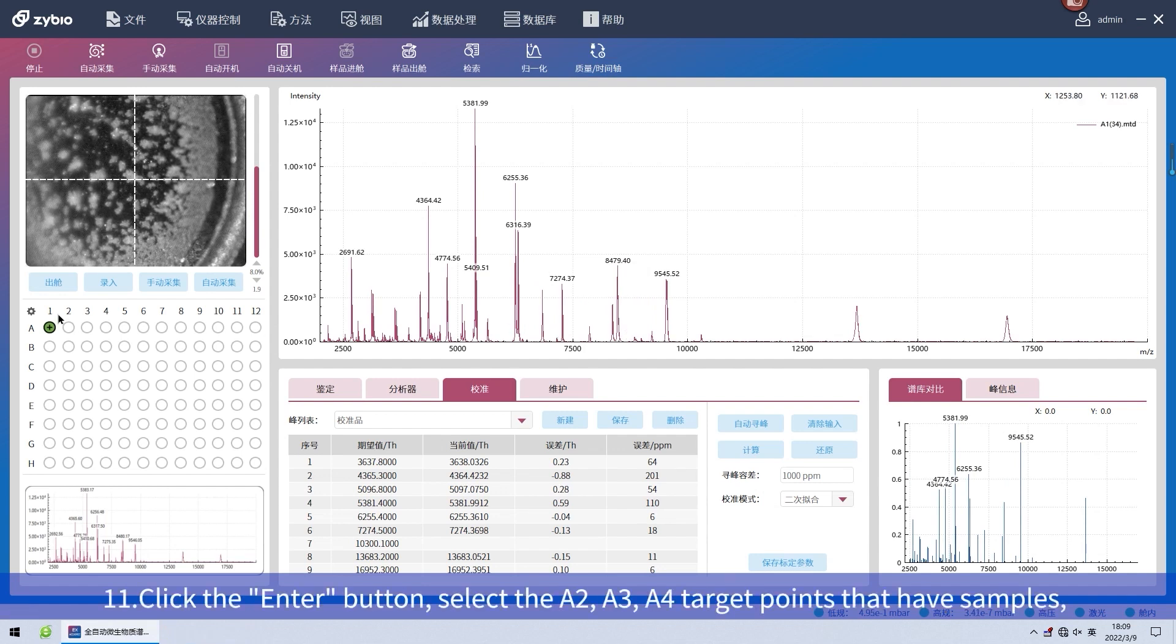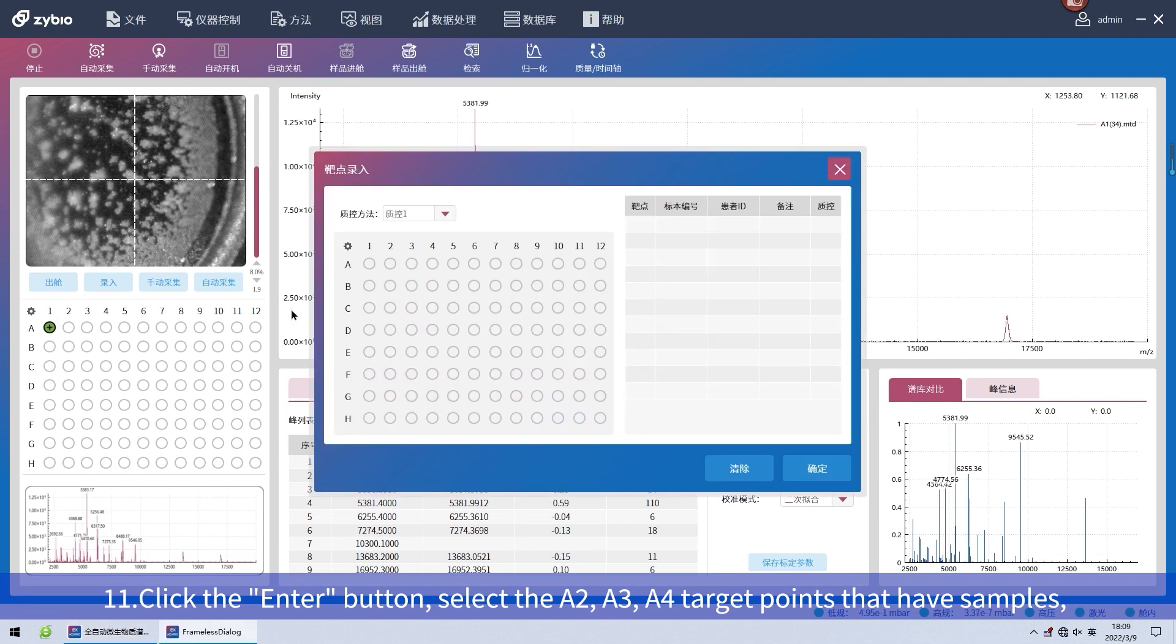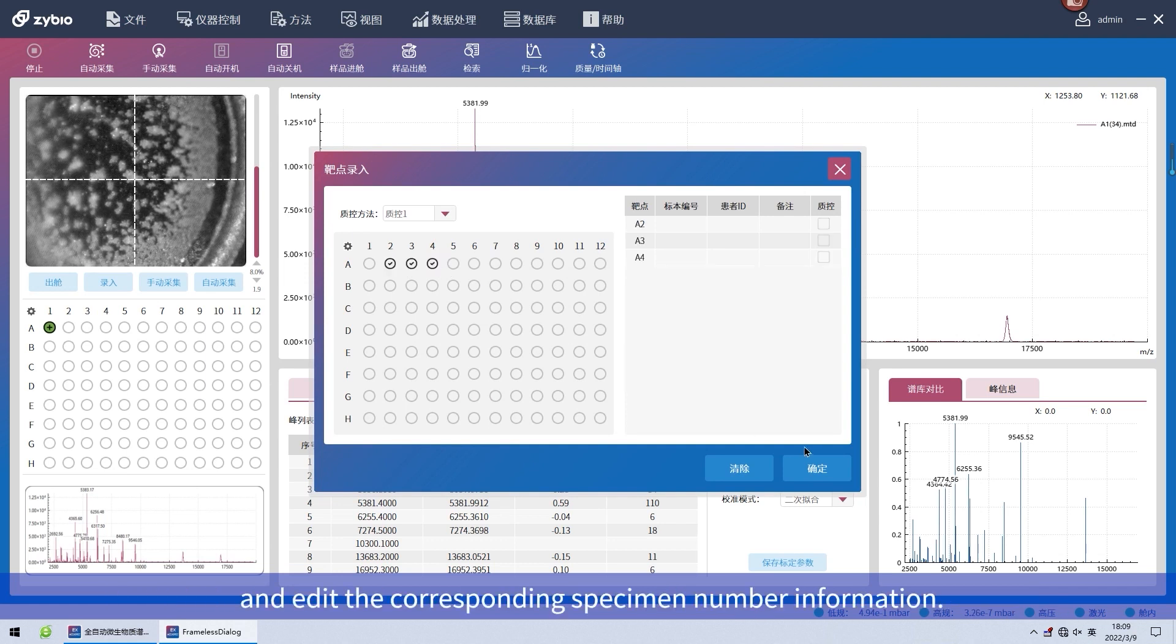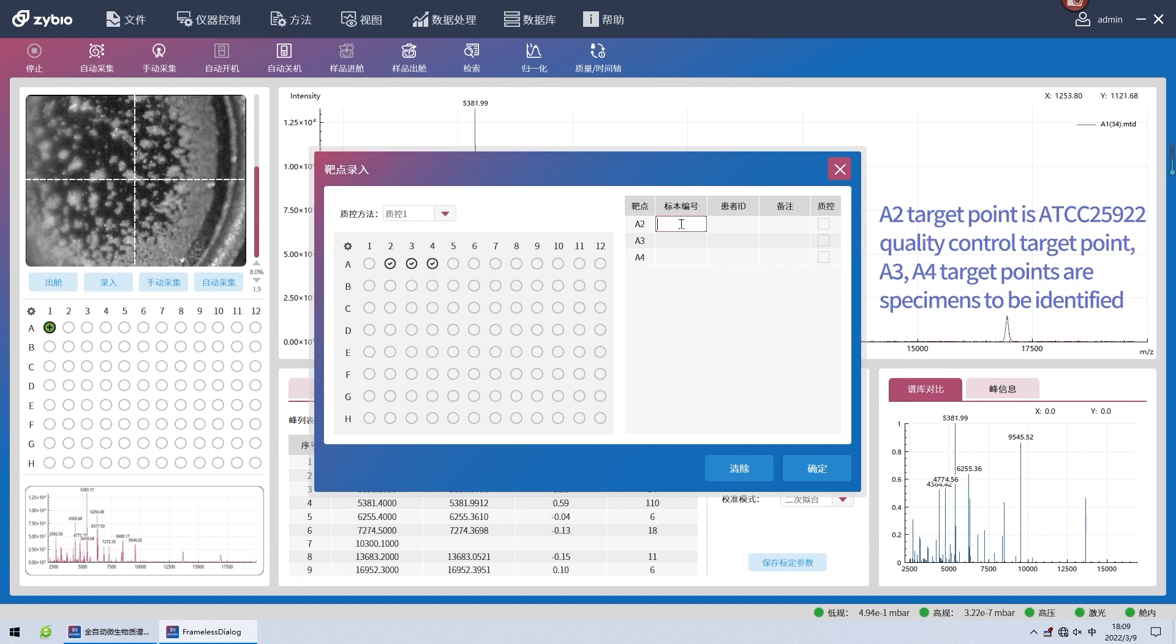Eleventh, click the enter button, select the A2, A3, A4 target points that have samples, and add the corresponding specimen number information. A2 target point is ATCC 25922 quality control target point. A3 and A4 target points are specimens to be identified.